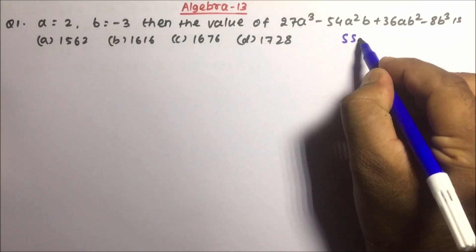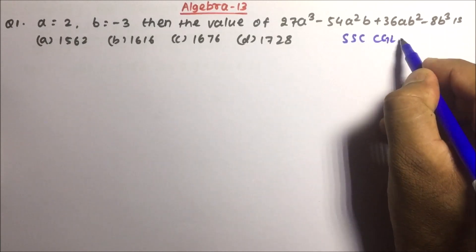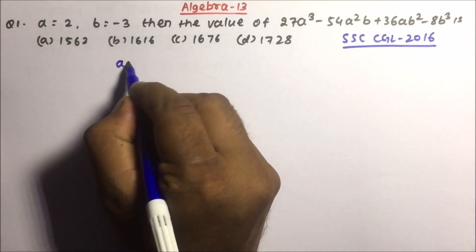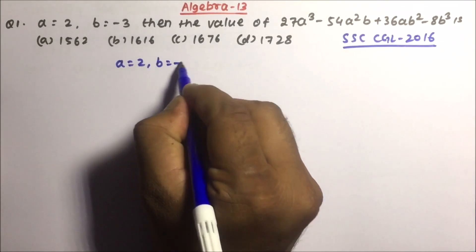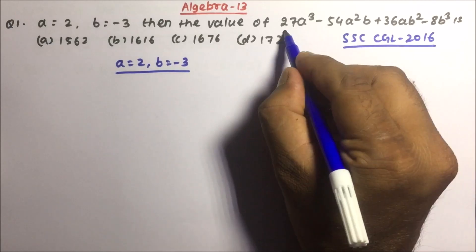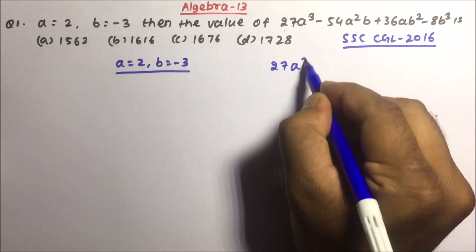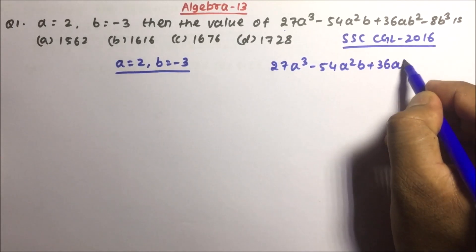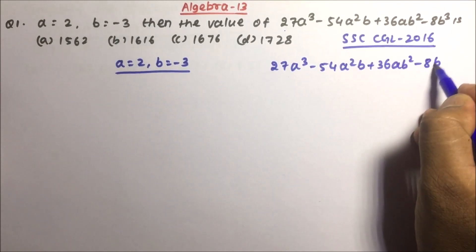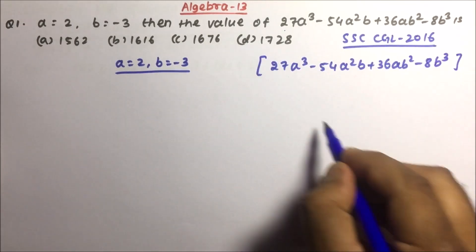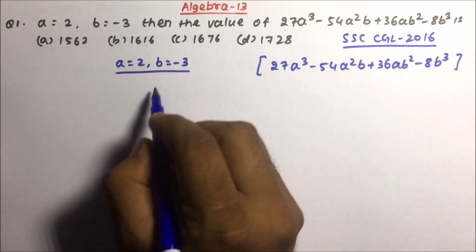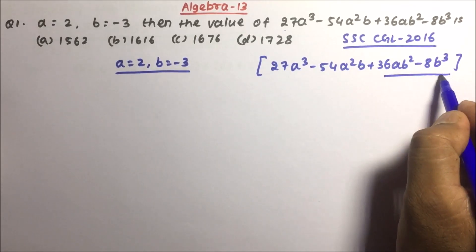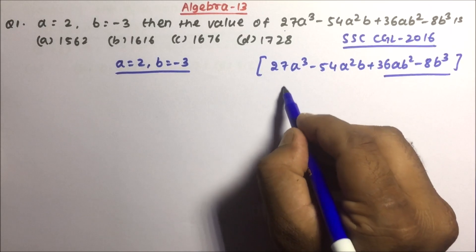Question number one: this question has been asked in the SSC CGL 2016 examination and it is a good problem. a is equal to 2 and b is equal to minus 3. We need to calculate the value of 27a³ minus 54a²b plus 36ab² minus 8b³. If you start solving this by directly putting the values of a and b, it will become very complicated.